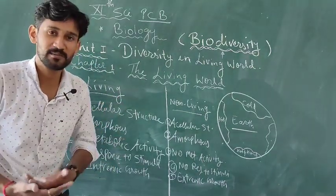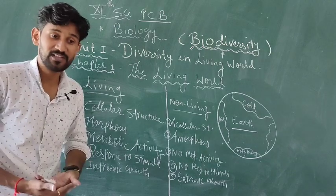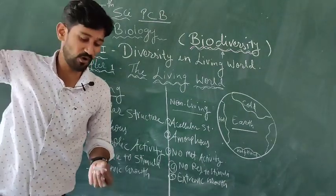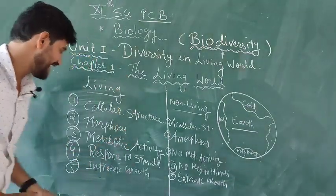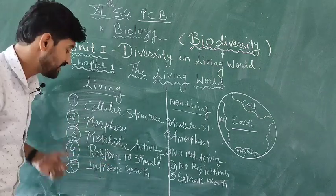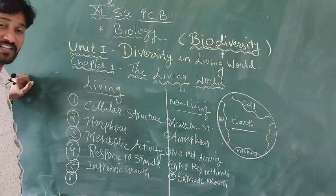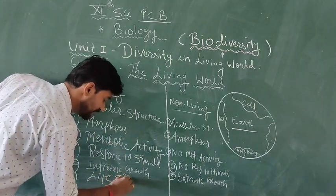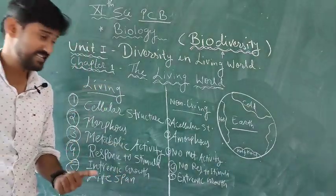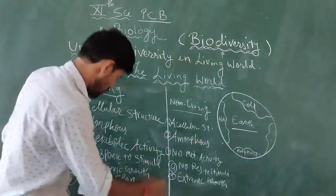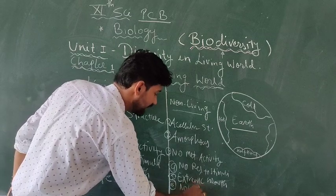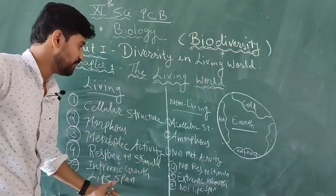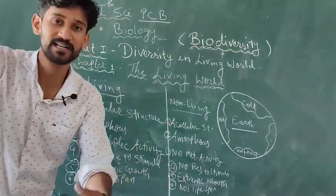If we look at weight: after birth a human is 3 to 4 kg, but after growing, that weight becomes 60, 40, or 80 kg. That is because of intrinsic growth, carried out from inside. The next definitive property is that living organisms have a definite life span, meaning birth and death periods are present in living organisms. Non-living organisms do not have any particular life span.